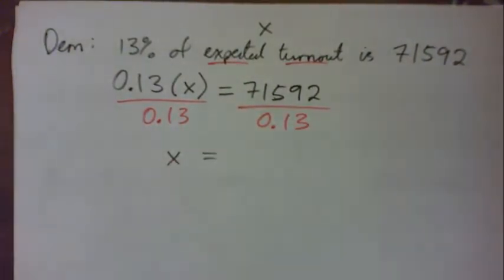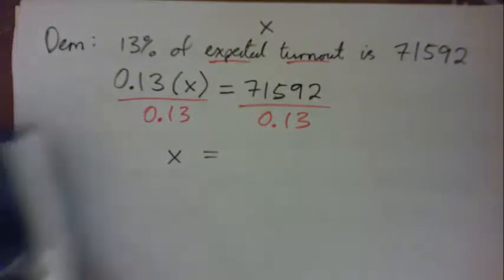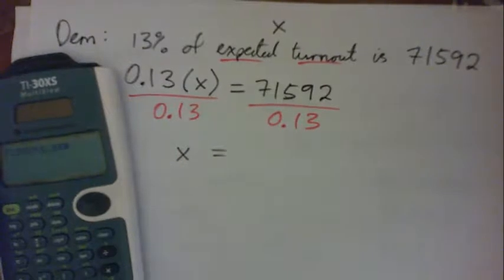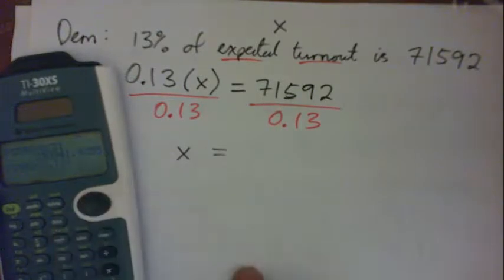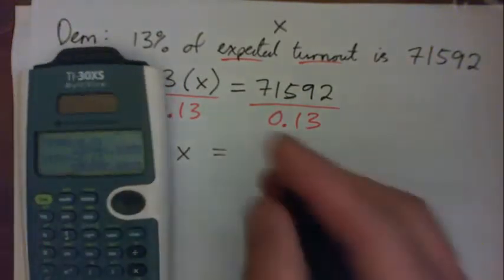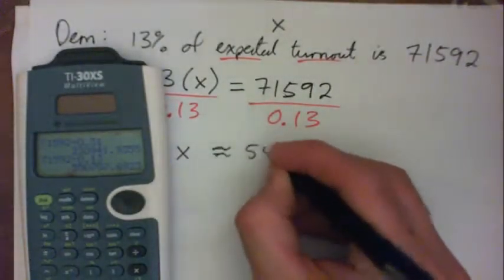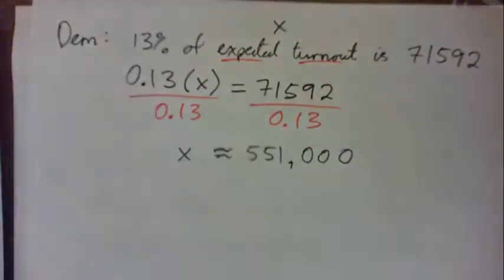This is a messy one to do by hand. I'm just going to stick this in the calculator; don't expect you guys to be doing this by hand. 71,592 divided by 0.13, and it becomes approximately 551,000. It's around there, make sense?